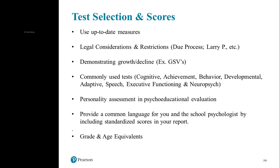There are some local restrictions. For example, the Larry P ruling out of California in the seventies prohibits using IQ tests on African Americans — or any test measuring cognitive abilities on African Americans — in schools, because at the time the tests were legitimately biased and detrimental to some of those communities. Being aware of those regulations not only for your state for making the IEP determination, but also knowing the restrictions. The Larry P restriction in California applies only to schools — private practitioners can use cognitive tests with African Americans.